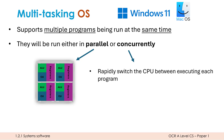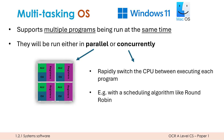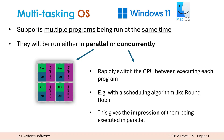With concurrent processing, we have overlapping time periods. The OS will rapidly switch the CPU between executing each program. Each program gets a tiny amount of time — possibly using a scheduling algorithm like round robin — maybe a few clock cycles or microseconds on the CPU. Because the user operates much slower than the CPU, we don't notice the switching, giving the impression of programs running in parallel.